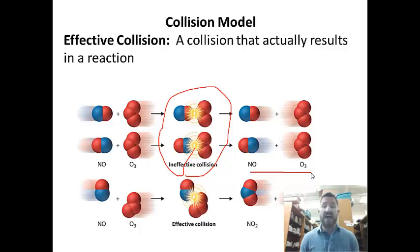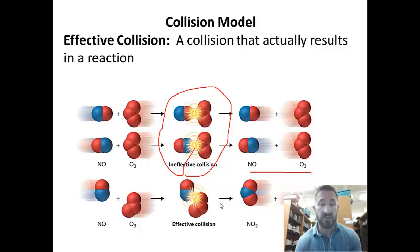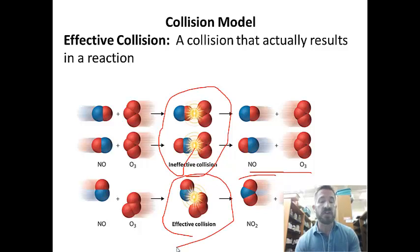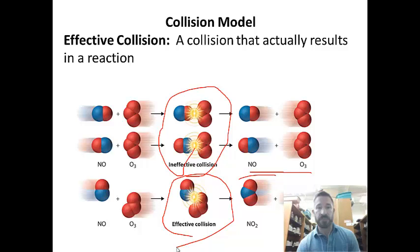At the bottom, we have an effective collision. An effective collision resulted because there are new products. The products of this reaction are nitrogen dioxide and oxygen gas. So you may not see that right here, but the two products are nitrogen dioxide and oxygen gas. So this is an effective collision because it resulted in a reaction.